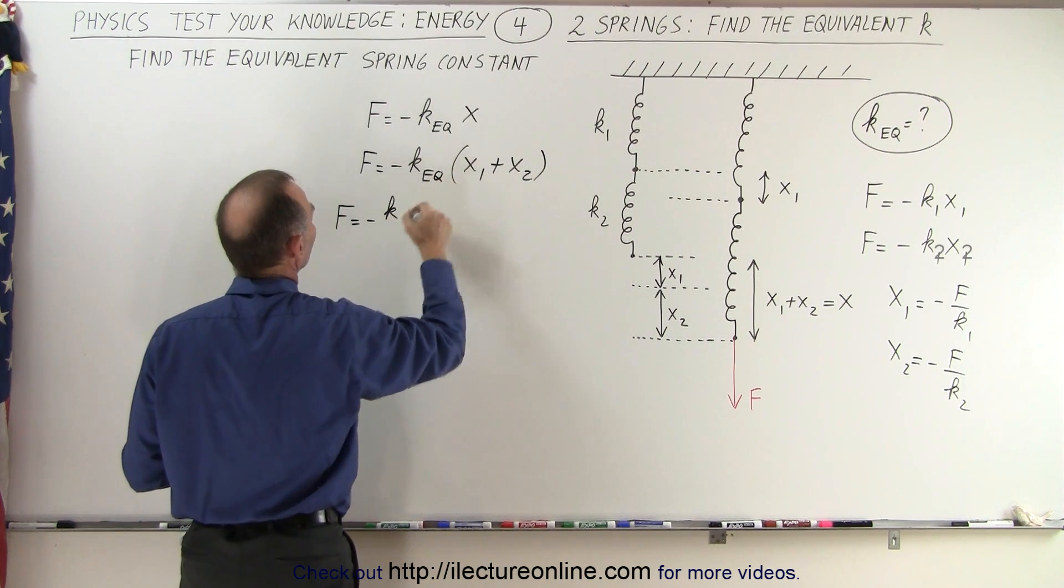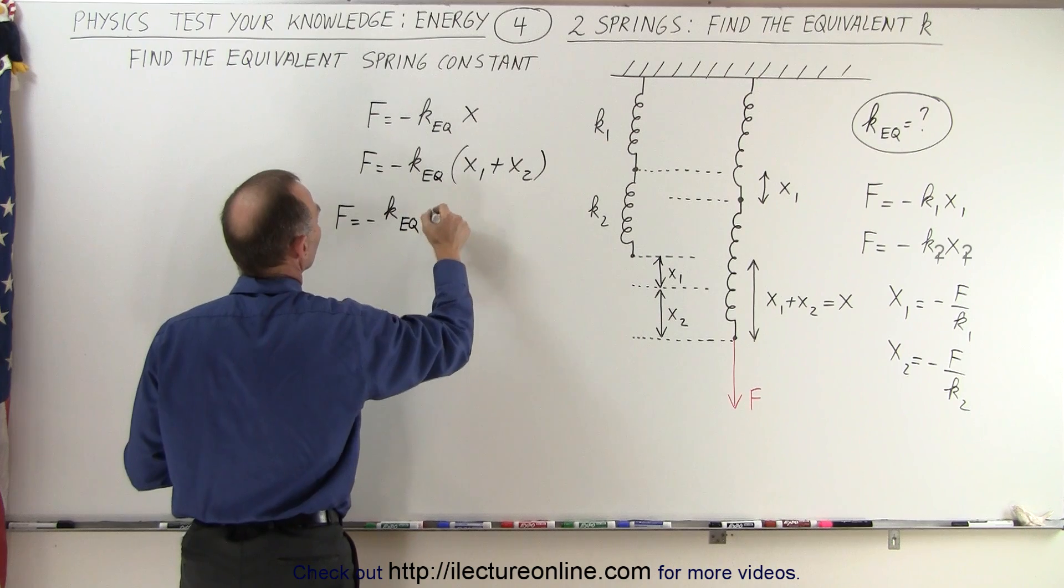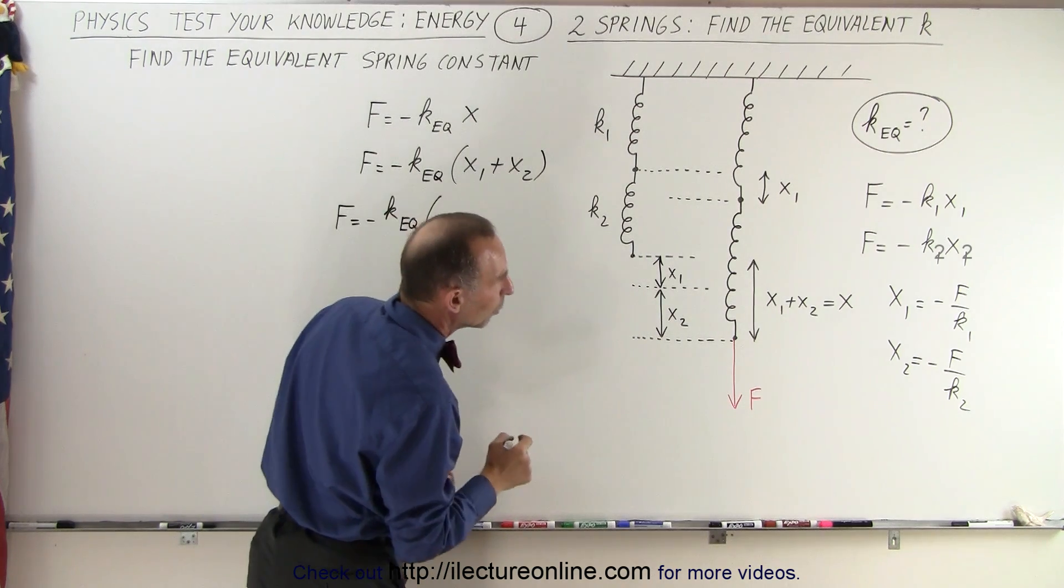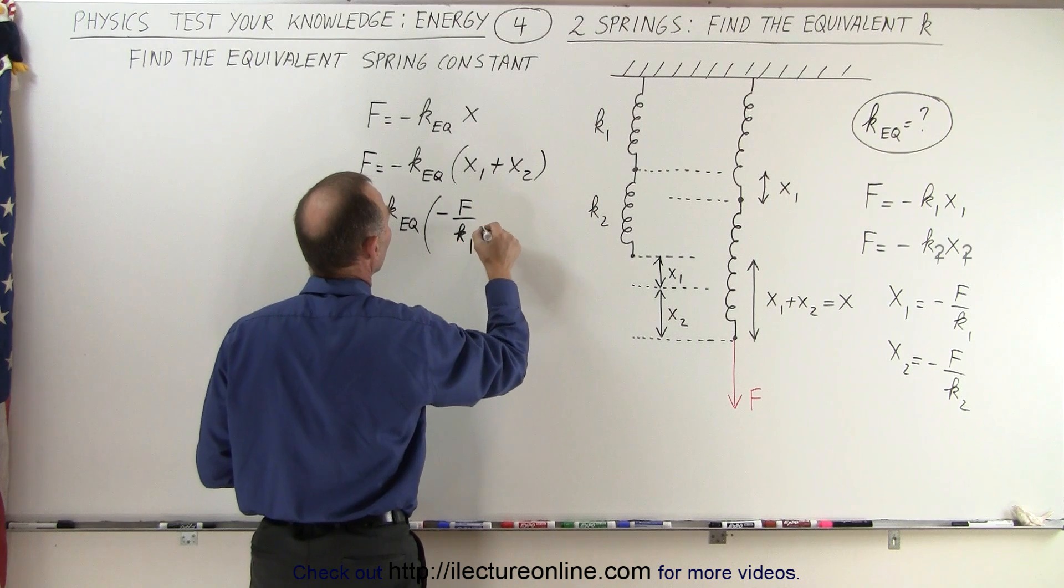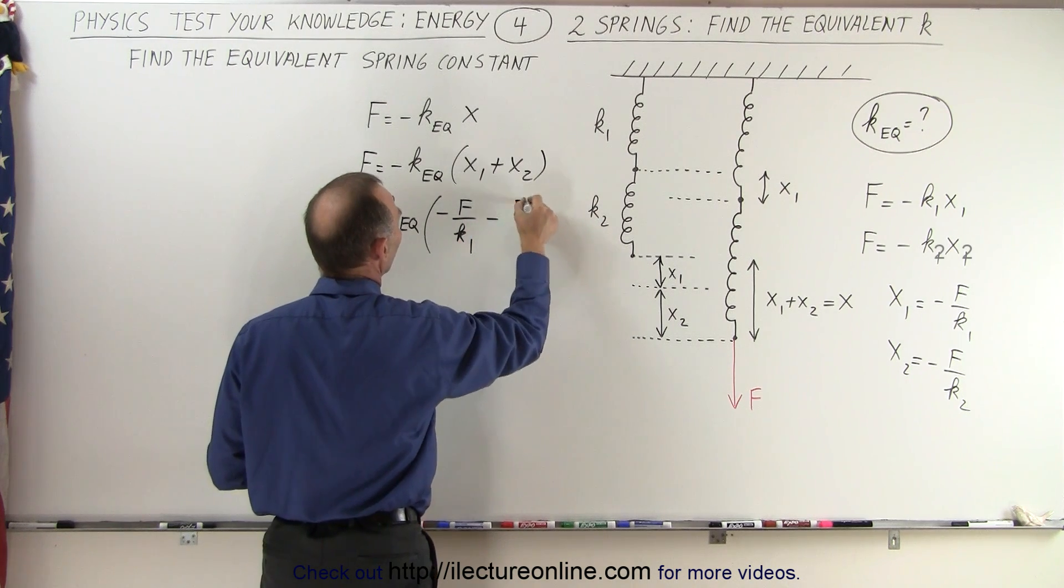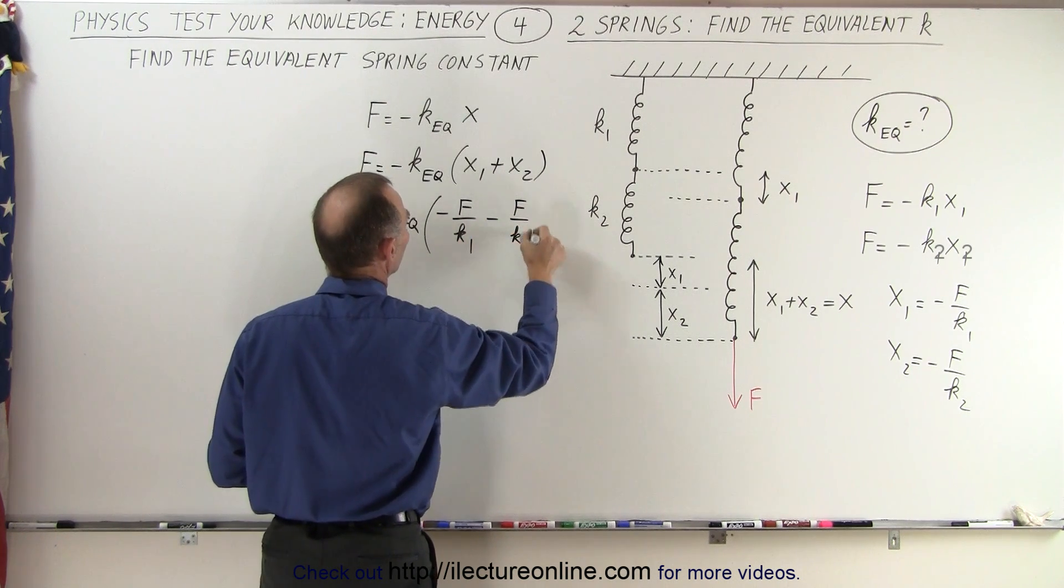So now we can write that F is equal to minus k equivalent, that should be not x but k equivalent, k equivalent, times x1, which is minus f over k1 plus x2, which is minus f over k2.